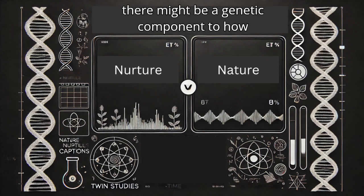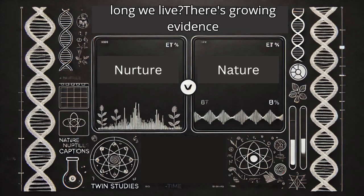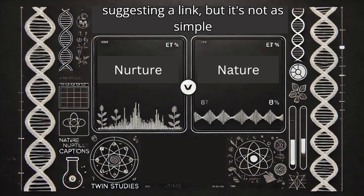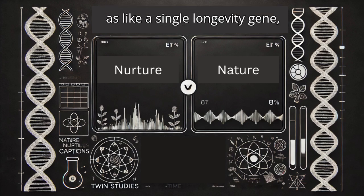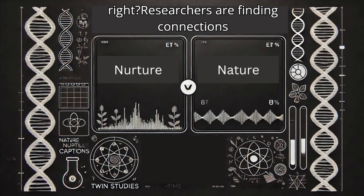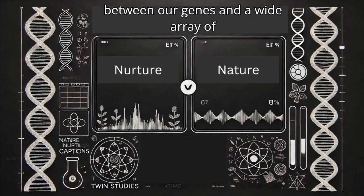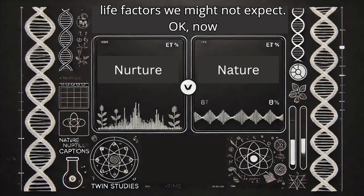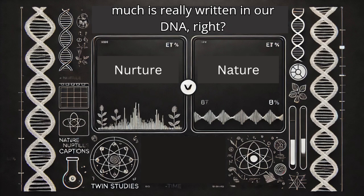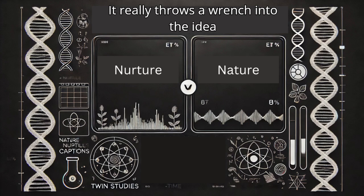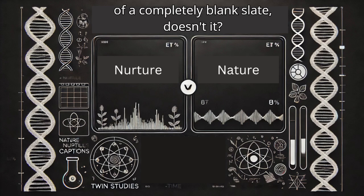Hold on. Are you telling me there might be a genetic component to how long we live? There's growing evidence suggesting a link, but it's not as simple as a single longevity gene. Researchers are finding connections between our genes and a wide array of life factors we might not expect. Now that is both incredible and just a little bit unnerving. It makes you wonder how much is really written in our DNA. It really throws a wrench into the idea of a completely blank slate, doesn't it?